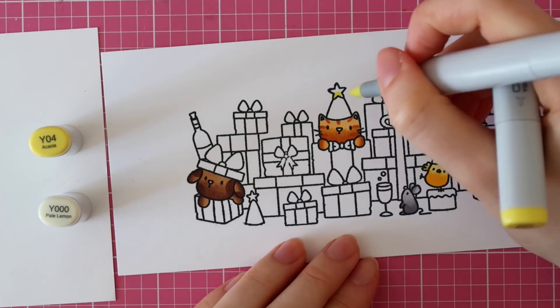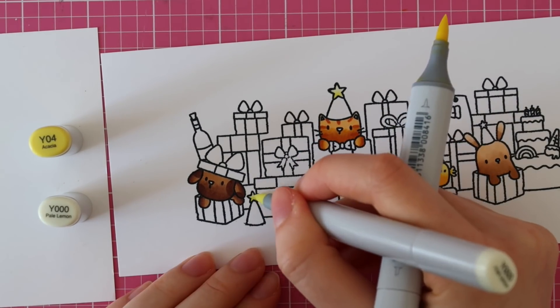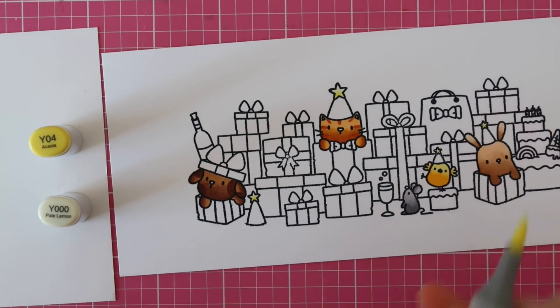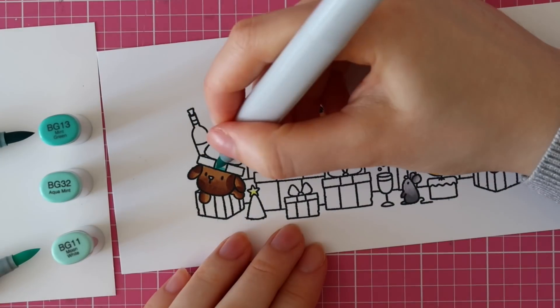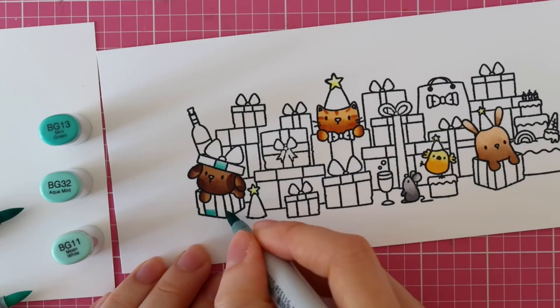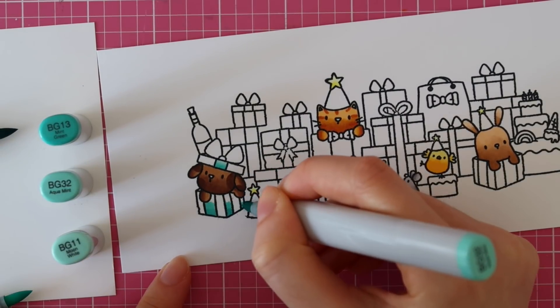Now that I colored all of my little critters, it's time to color the other images. For those little stars on the party hats, I'm using Y04 and Y000. And then for the turquoise gifts, I'm using BG13, BG32 and BG11.